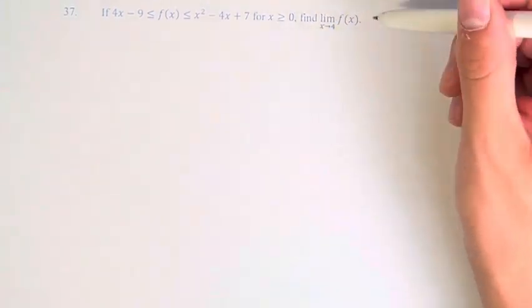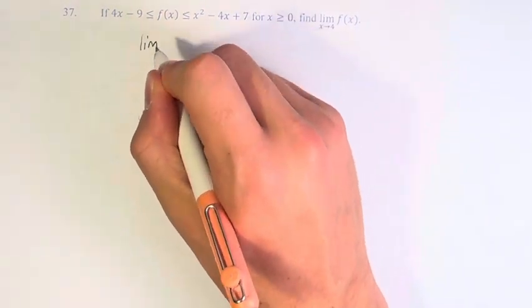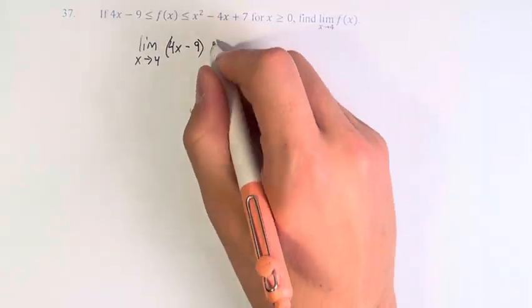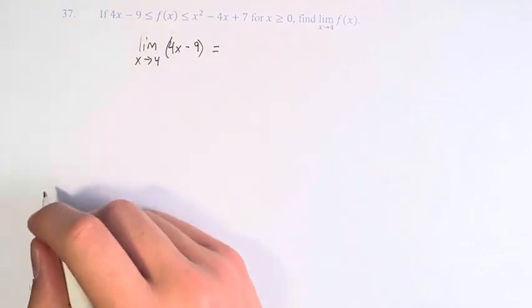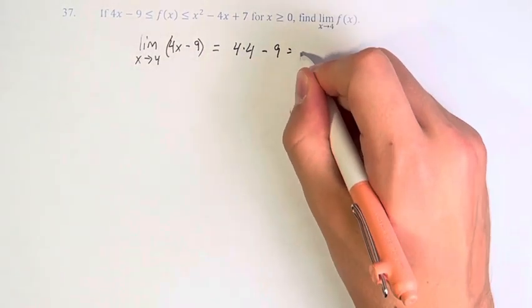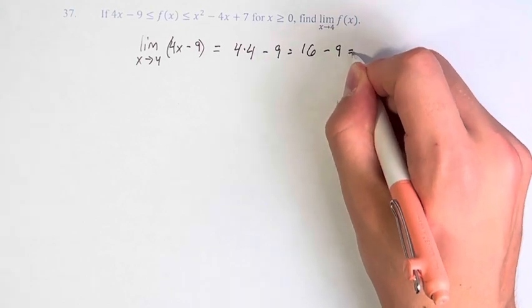So to find this we have to find the limit as x approaches 4 of 4x minus 9. We can do this by just plugging in 4, 4 times 4 minus 9 is 16 minus 9 which is 7.